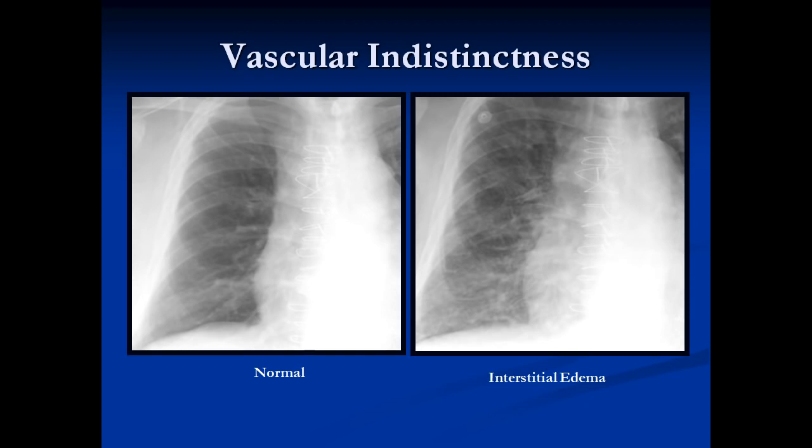We talked about vascular indistinctness — you get fluid around the vessel and around the bronchus. Around the bronchus it leads to peribronchial cuffing, while around the vessel it makes the vessel look larger and indistinct. This is the same patient — normal on the left and with interstitial edema on the right. The vessels look larger and they're ill-defined. You can't pick one vessel out over the other. This is called perihilar edema.